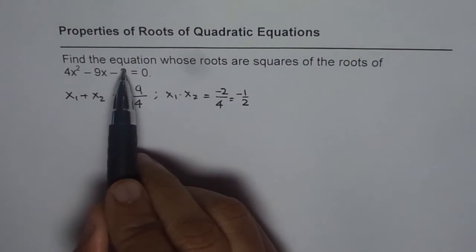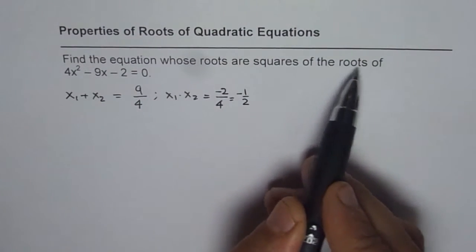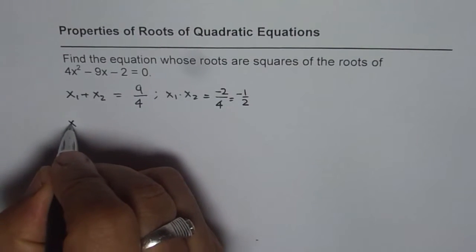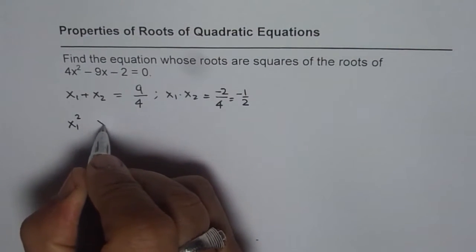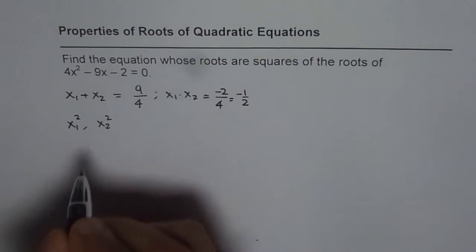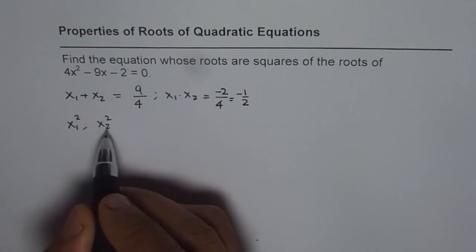Now we need to find the equation whose roots are squares of the roots of this function. So the roots for that are x₁² and x₂². These are the roots of our new equation and that is what we need to figure out. If the roots are x₁² and x₂², then we need to find their sum and product.